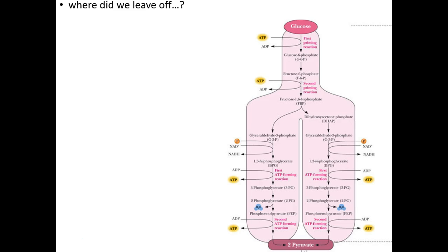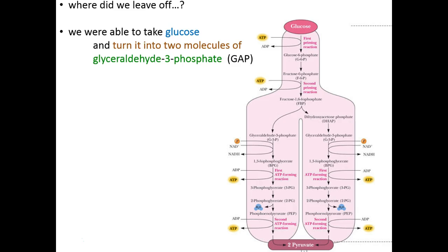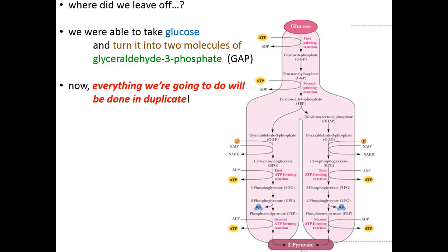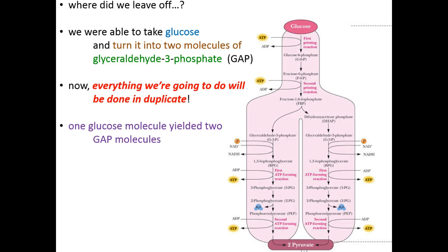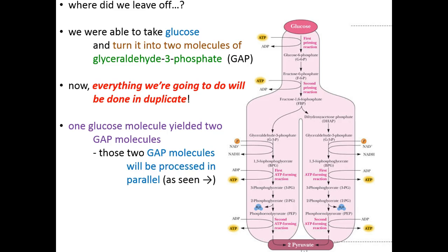Let's remind ourselves where we left off. This is our roadmap. In the last lecture we saw how two molecules of glyceraldehyde-3-phosphate could be made from glucose. We ended off by making one molecule of GAP and one of DHAP, but then triose phosphate isomerase was able to isomerize DHAP into a second molecule of GAP. From this point moving forward, we're going to do everything in duplicate — two parallel reactions every step of the way — because one molecule of glucose yielded two identical molecules of GAP.